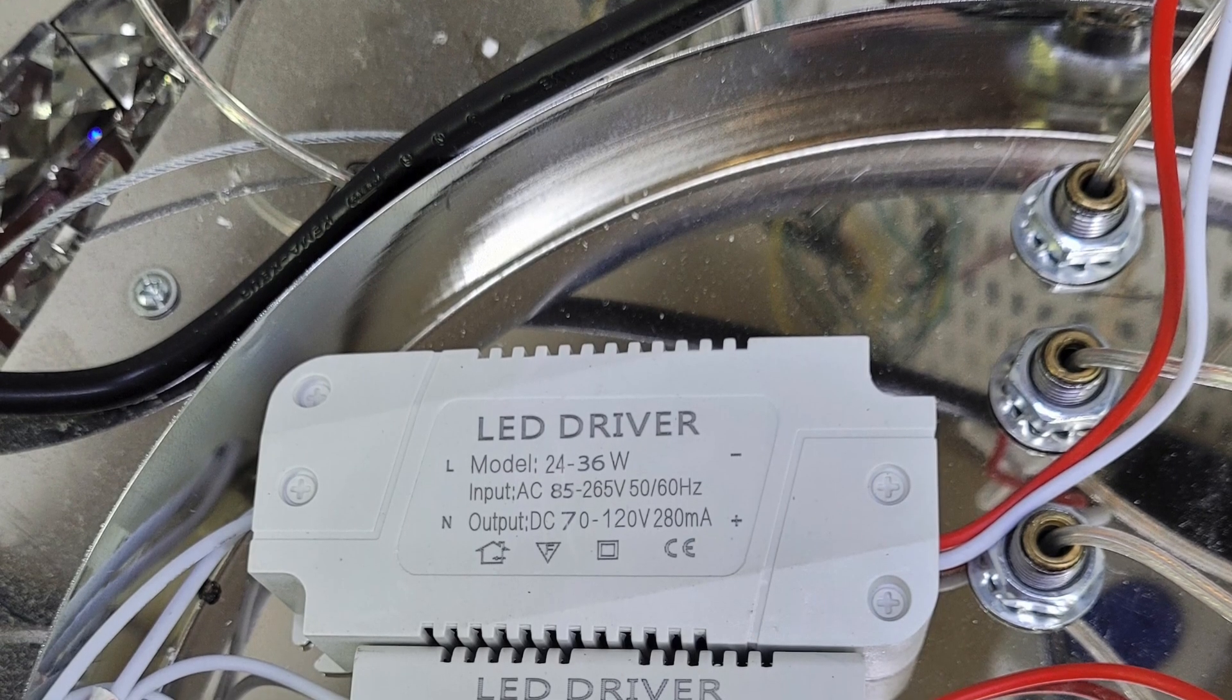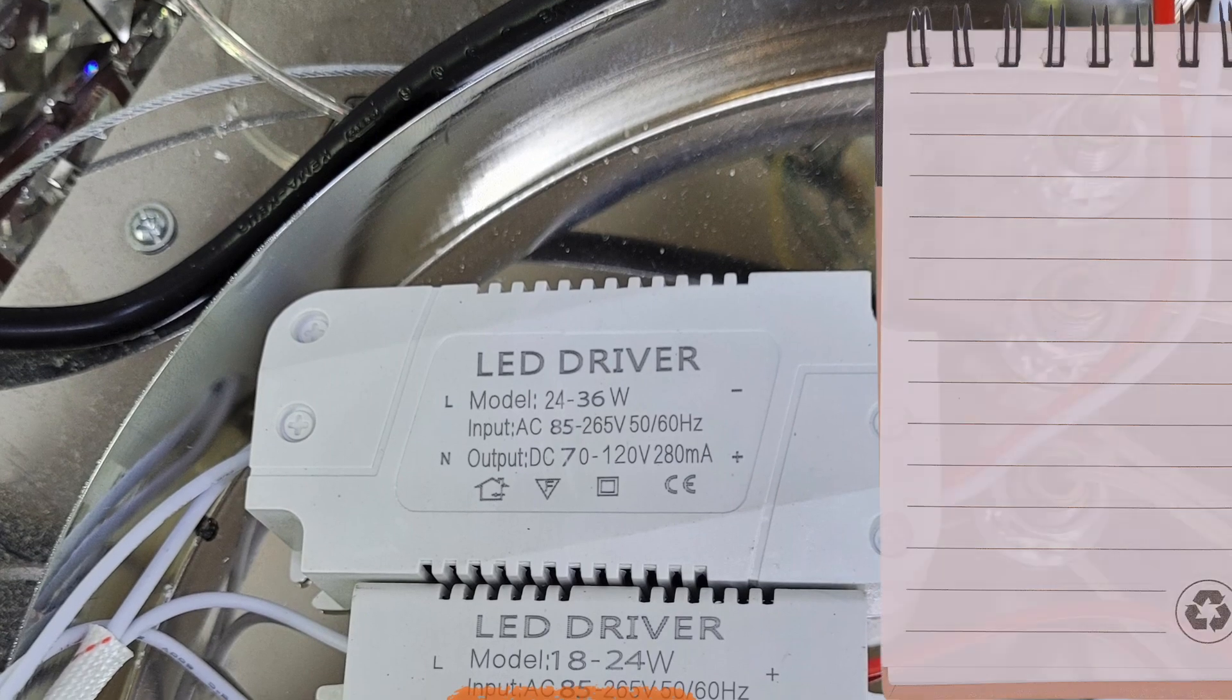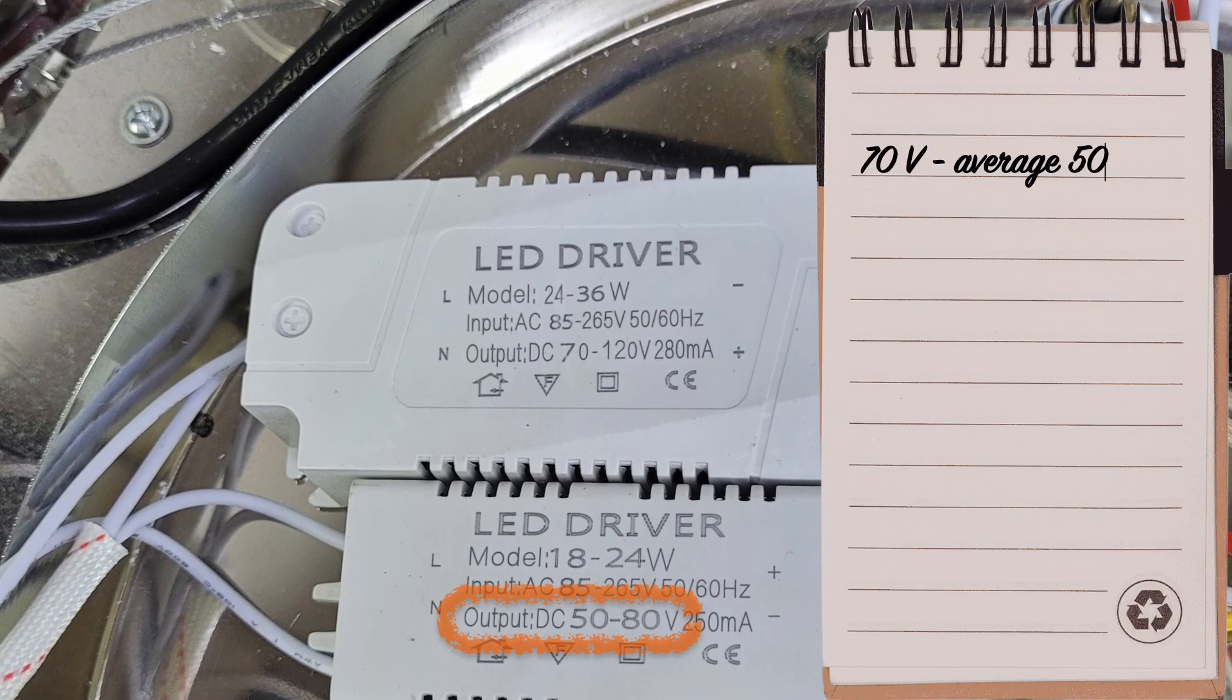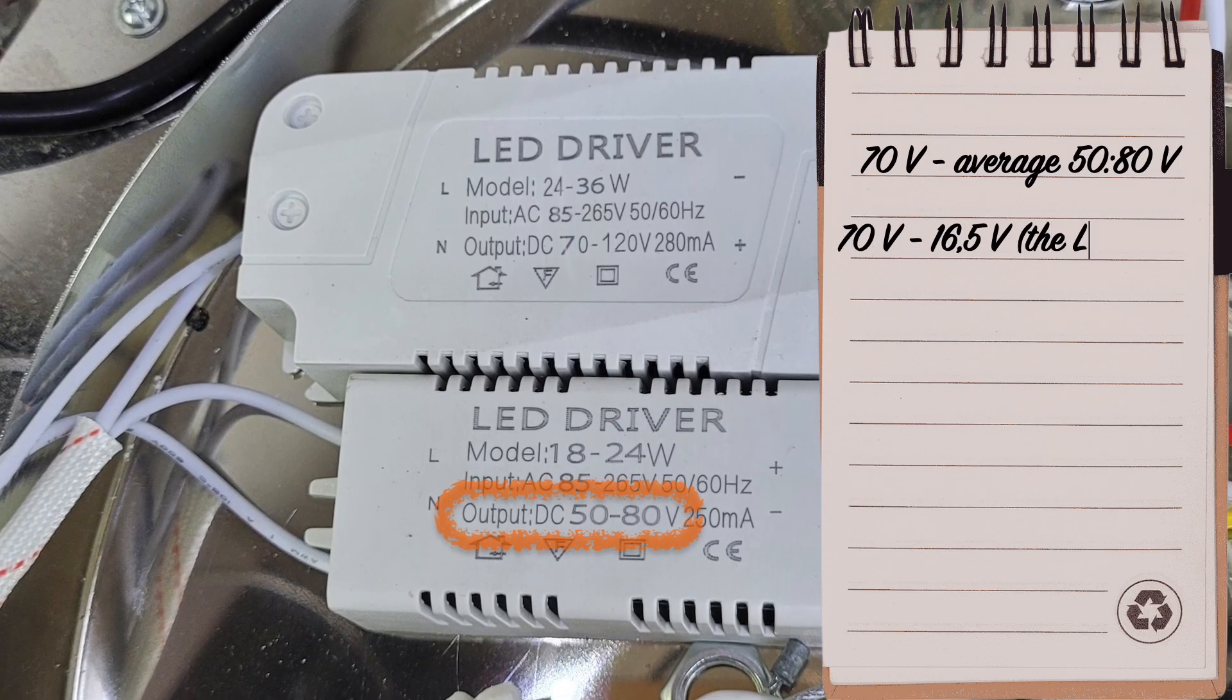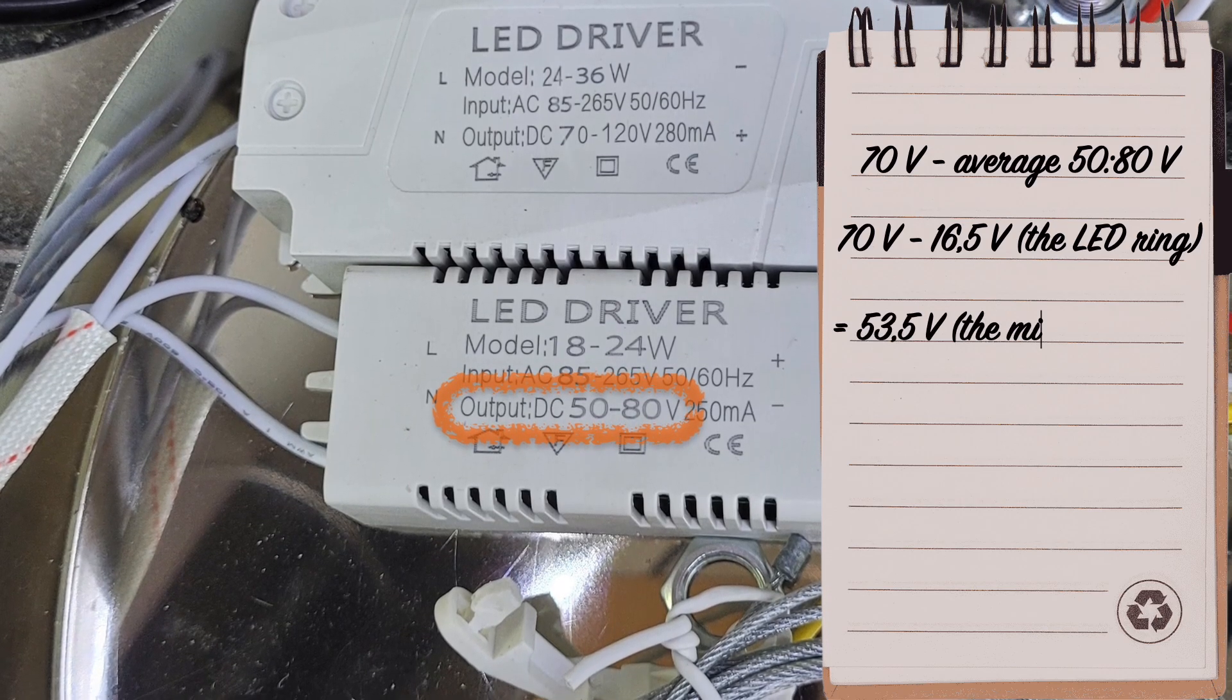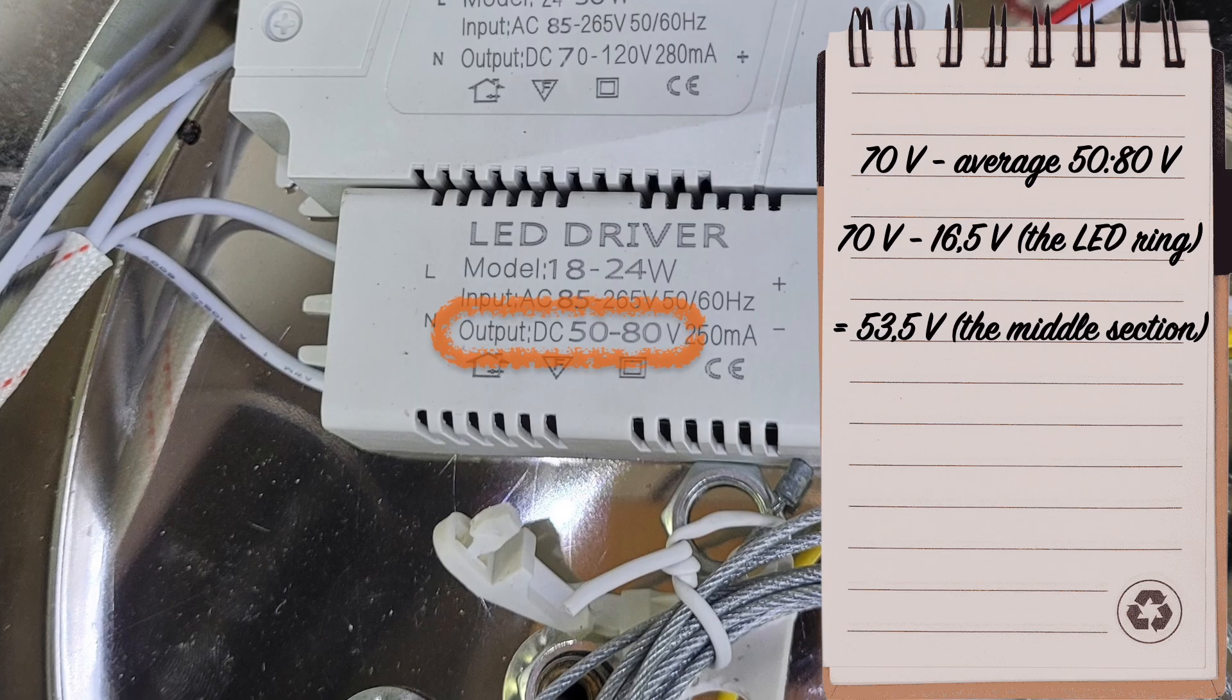The photo of the driver shows that the small driver produces from 50 to 80V. To calculate the test voltage of this entire circuit, let's choose an average value of 70V. Of these 70V, 16.5V should be for the LED ring and the balance should be 53.5V for the middle section of the chandelier.